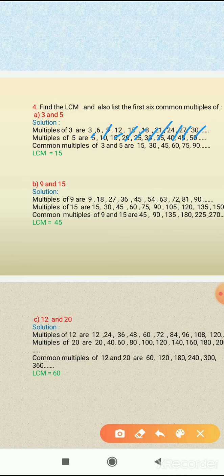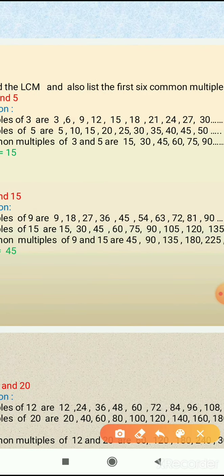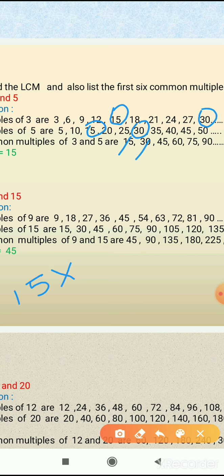Here we have to list the 6 common multiples. We encircle the common multiples. The first common multiple is 15, and the next common multiple is 30. We can generate more common multiples. The first common multiple is 15, the second is 30, and the third we get by multiplying 15 by 3: 15 times 3 is 45. So the third common multiple is 45.